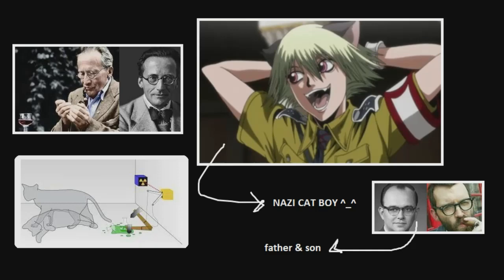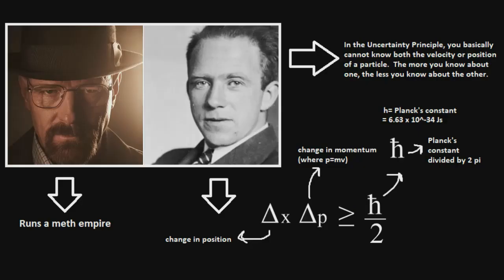But anyways, despite how cool Schrodinger was, no one is as cool as the great meth dealer of all time, known simply as Heisenberg, who created this thing called the Uncertainty Principle, but nobody really cares about that, people mostly just care about the massive amounts of meth he was able to manufacture for himself.